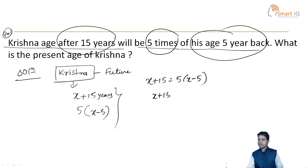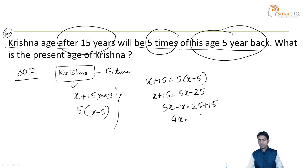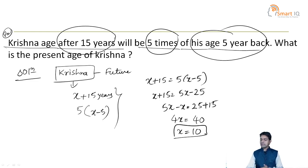Now the simple calculation: X plus 15 equals 5 into X minus 5, which gives X plus 15 equals 5X minus 25. Shifting 5X to the left side: minus 4X equals minus 25 minus 15, so minus 4X equals minus 40, giving X equals 10. So the present age of Krishna is 10 years.